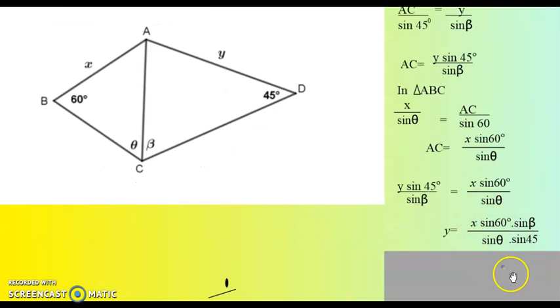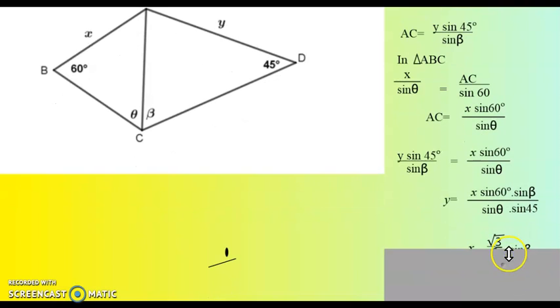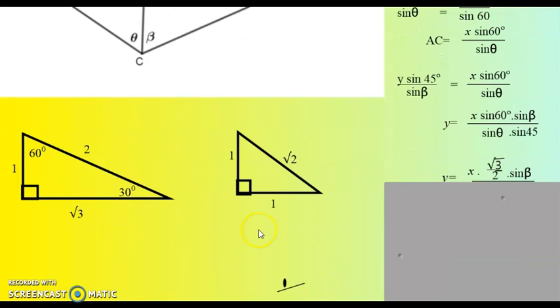So sine of 60 is equal to square root of 3 over 2. So I can simplify that by using my special triangles. When I look at my special triangles, sine of 60 degrees, the opposite over the hypotenuse, square root of 3 over 2, then multiply with sine of beta, and then sine of 45 degrees. Let's look at 45. Sine of 45 degrees is the opposite over the hypotenuse. So that is 1 over square root of 2, multiply by sine of theta.